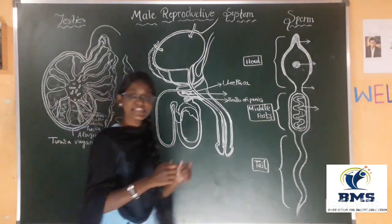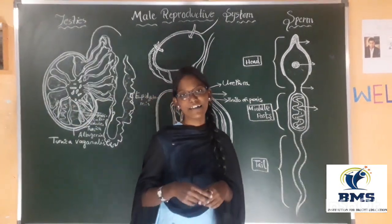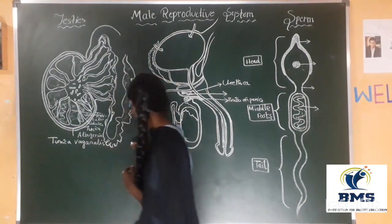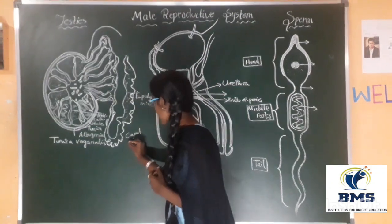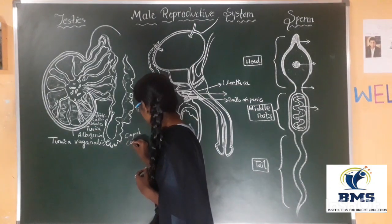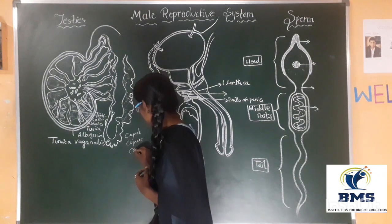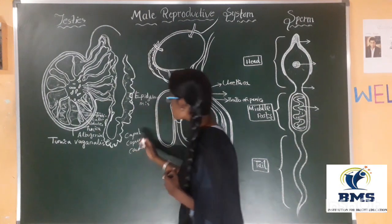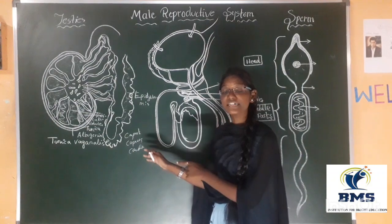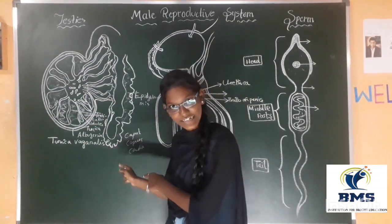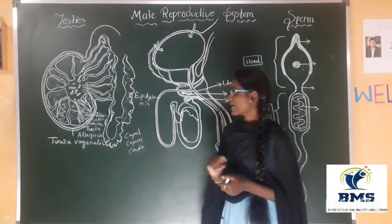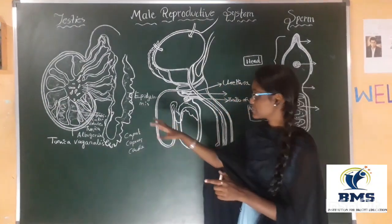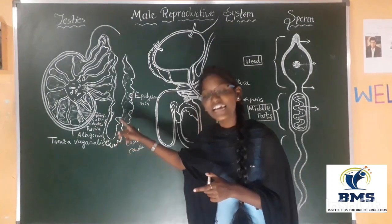In this epididymis there are 3 parts: caput, corpus, and cauda. These are the 3 parts of the epididymis. This is all about the structure of the testis.